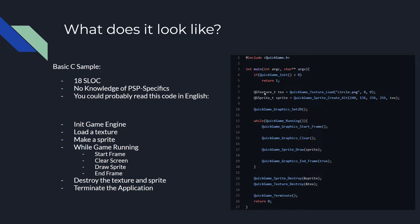The first thing we create is a Quick Game texture object — we call it 'text' — and we call the function Quick Game texture load, which loads a circle.png file. It has two options: whether you flip it and whether you put it in VRAM; having zeros here makes both false. Then we have a Quick Game sprite object, and we call sprite create alternative — there are multiple ways to create a sprite, including contained sprites. This version lets us specify the X and Y position and the size. The X and Y position of a sprite is centered in the middle, and the sprite needs the texture to know what texture to use.